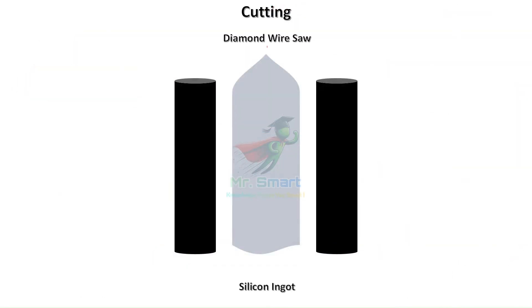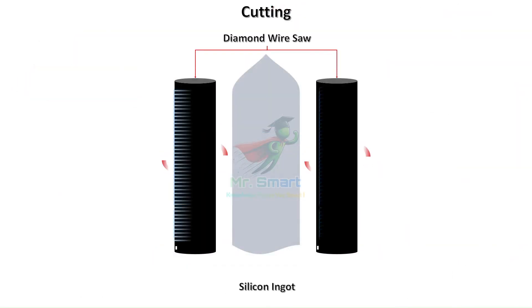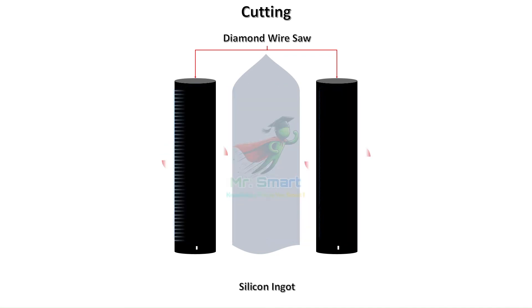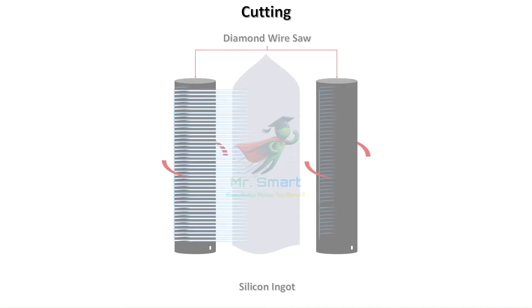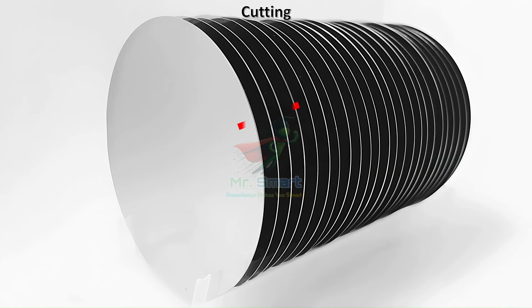The ingot is then sliced into thin wafers using a diamond wire saw. These wafers must be perfectly uniform in thickness to ensure consistency in electronic circuits.